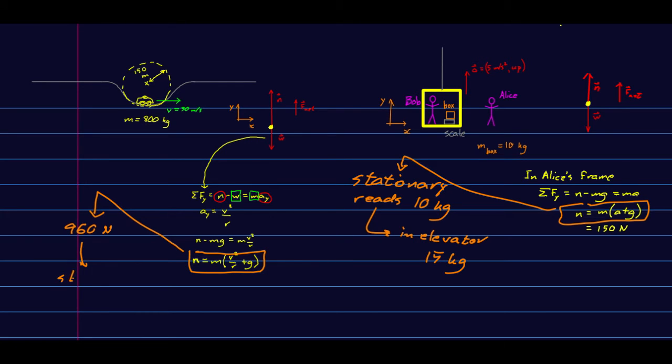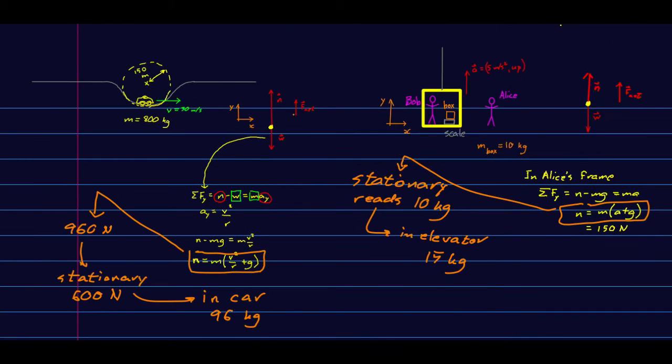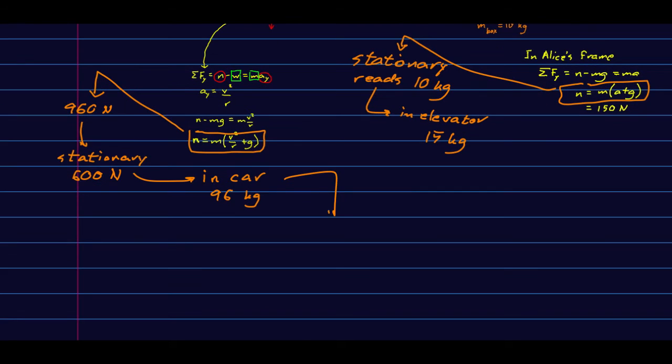Normally in the stationary situation, standing on that scale in your bathroom, it reads 60 kilograms when it measures a normal force on it of 600 newtons. So that means in the car it is reading 96 kilograms, and so it reads heavy. Think about what you feel in these situations. In the car you feel pressed into your seat as you go through the bottom. In the elevator you feel your feet pressing harder onto the floor of the elevator, and so you literally feel heavy.